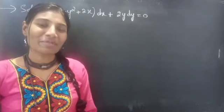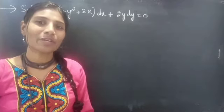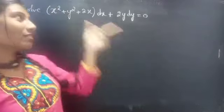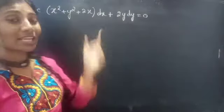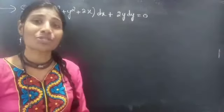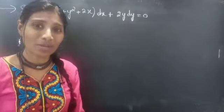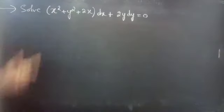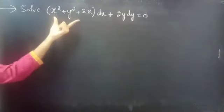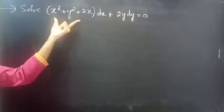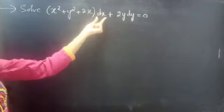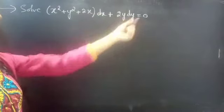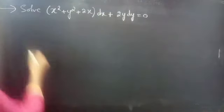Hello everyone, this is Jay Kalpana here. In this video, we are going to solve the given differential equation which is known exact. Problem: Solve x squared plus y squared plus 2x into dx plus 2y dy equals to 0.